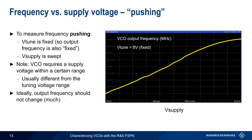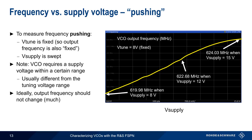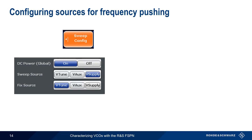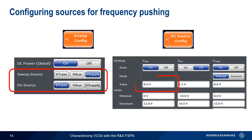Ideally, the output frequency should not change much due to fluctuations in supply voltage. Here, the output frequency at normal 12-volt supply is 622.68 MHz, drops to 619.98 MHz when supply falls to 8 volts, and rises to 624.03 MHz when supply rises to 15 volts. This variation in output frequency — or pushing — is why a precise, stable VCO power supply is important in many applications. On the FSPN, we change from a frequency measurement to a pushing measurement without re-cabling by swapping the Sweep Source and Fixed Source assignments under Sweep Config.